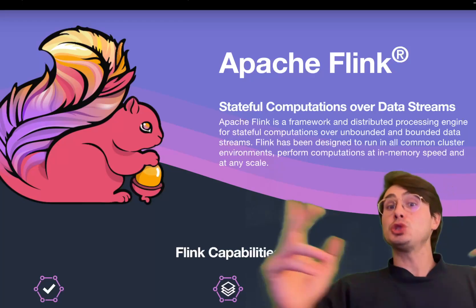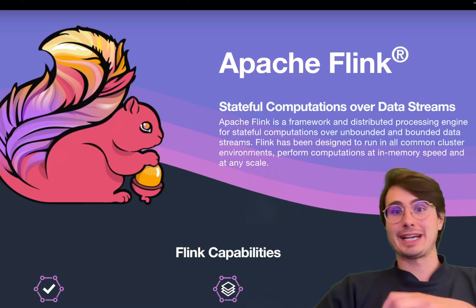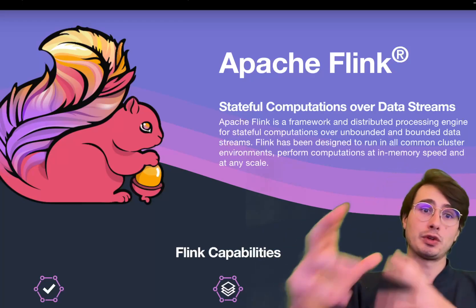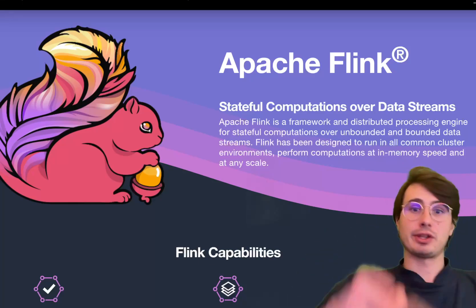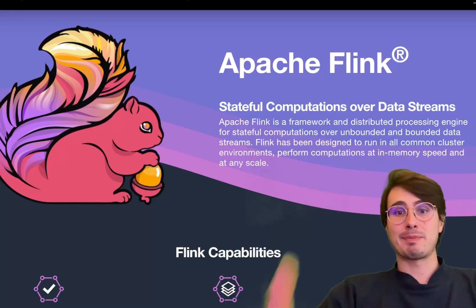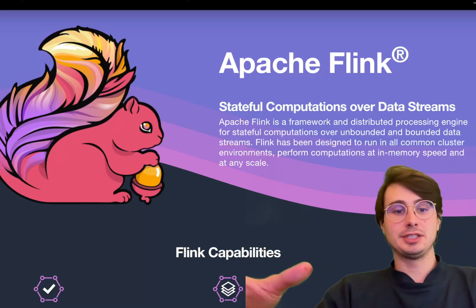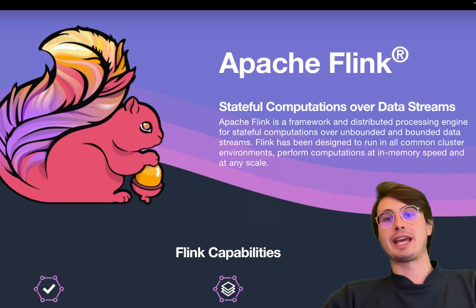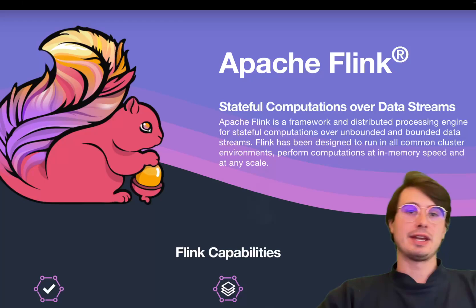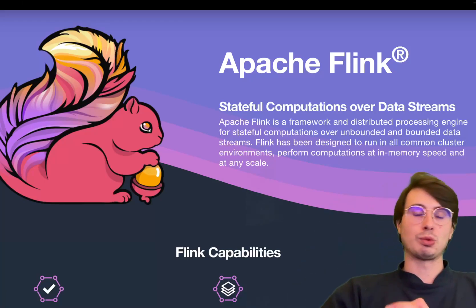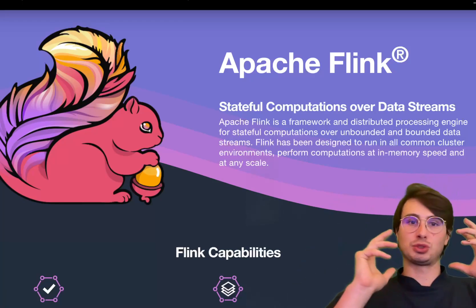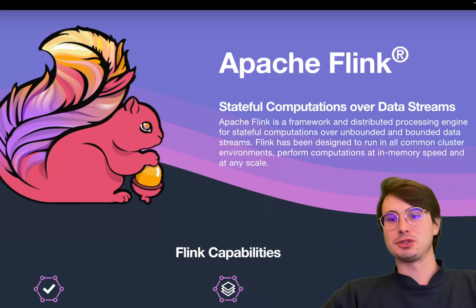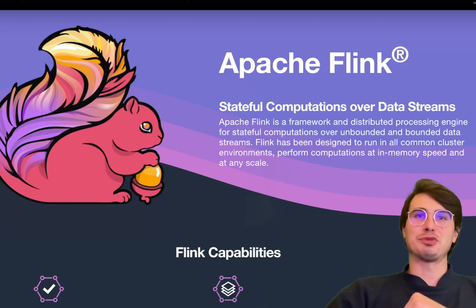What I'm going to outline in this video are the limitations, strengths, and ideal use cases for each tool based on their architecture and capabilities. For each tool I'll give an in-depth overview of how it's set up, how it works, how it's typically set up in production, the pros and cons, and the best use cases. Hopefully you'll leave with a good idea of which tool — Apache Flink, Spark, or Storm — is right for your use case.